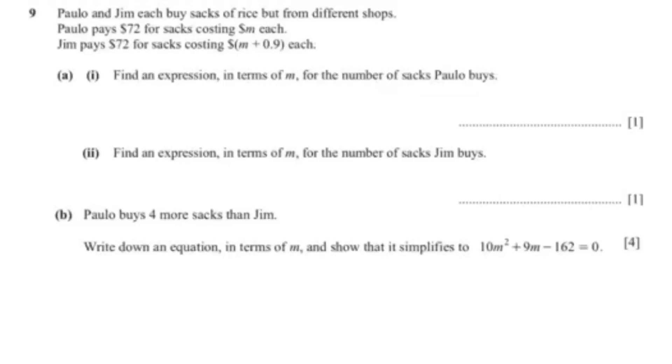So this question reads, Paula and Jim each buy sacks of rice but from different shops. Paula pays $72 for sacks costing M dollars each and Jim pays $72 for sacks costing M plus 0.9 each.